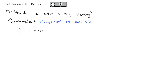For example, if we have (1 minus sine theta) over cosine theta equals cosine theta over (1 plus sine theta), we're going to attempt to prove this statement. This one's kind of tricky because they both look just about as simple on the left and right sides, so we could pick either side to work with. One additional strategy we can use is one we saw back in pre-calc 1 with rationalizing numerators and denominators — multiplying by a conjugate.